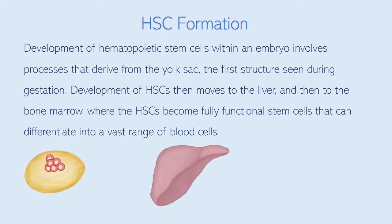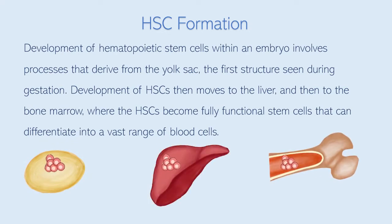Hematopoietic stem cell formation: for hematopoietic stem cells to fully develop within an embryo involves processes that derive from the yolk sac, the first structure seen during gestation, to the liver and then to the bone marrow, where it becomes a developed hematopoietic stem cell that can differentiate into a vast range of blood cells.